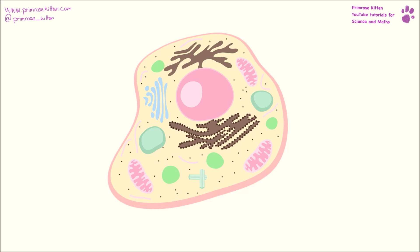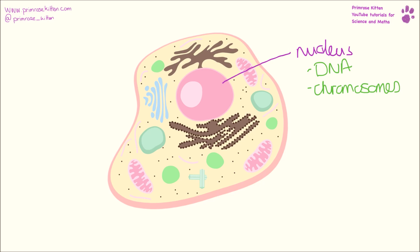Here is our animal cell — a rather beautiful one, not drawn by me I would quickly point out. Here in the middle is our nucleus, and our nucleus holds all of the DNA. This is going to be in chromosomes, and this is important for storing all the genetic information — the bits of coding that we need to make a cell and get the cell and bodies to do what we need them to do.